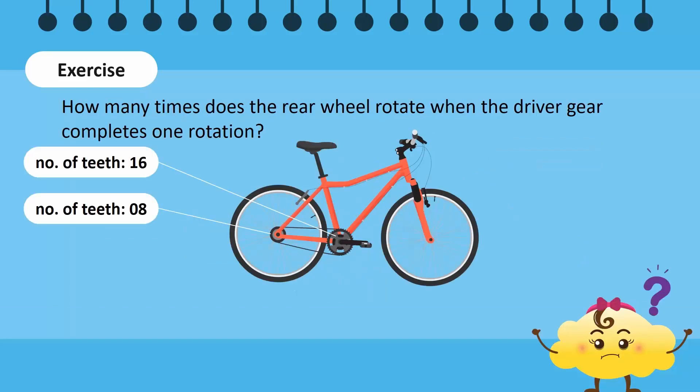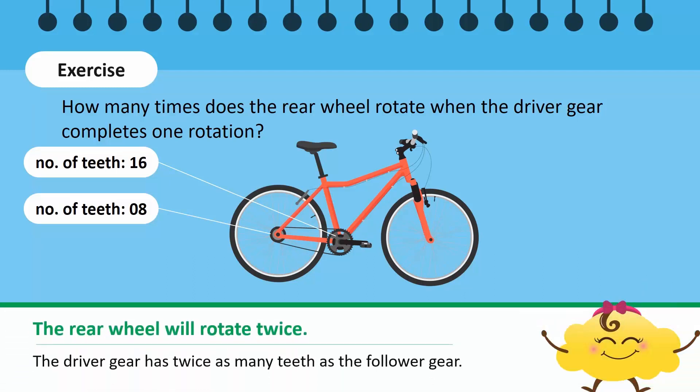In this bicycle, can you tell how many times the rear wheel rotates when the driver gear completes one rotation? Two, because the driver gear has twice as many teeth as the follower gear.